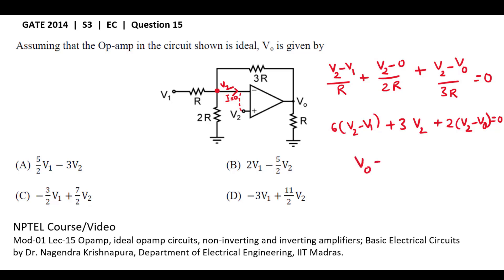After simplifying this equation you will get V0 equals minus 3V1 plus 11 by 2 V2. This is the output equation for the given problem. So option D is the right answer.